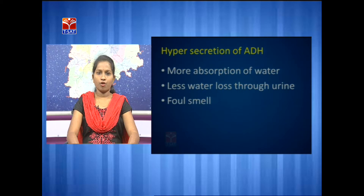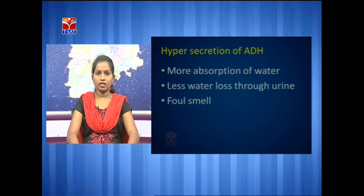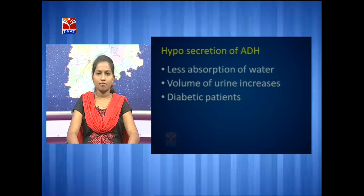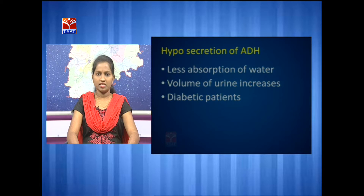Due to hyposecretion of vasopressin or antidiuretic hormone, less absorption of water takes place, so the volume of urine increases. Generally, a person urinates 5 to 6 times per day, but during this condition the person urinates more than 10 times per day. Conversely, due to hypersecretion, more reabsorption of water occurs and the urine becomes very hypertonic with a very bad smell. The condition of increased urination is seen in diabetic patients and is called diabetes insipidus.